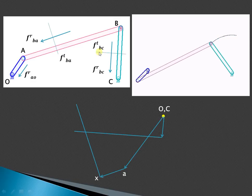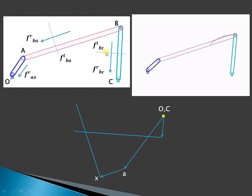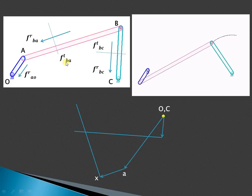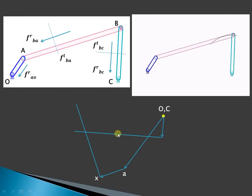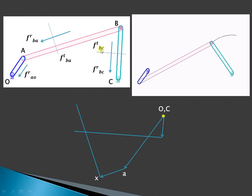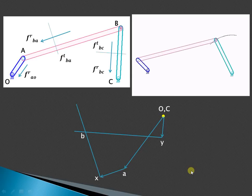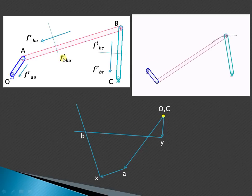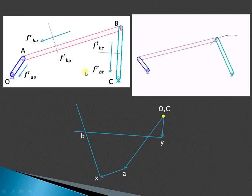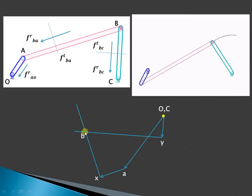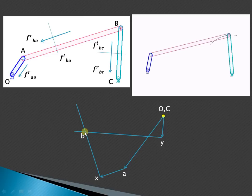Now draw a line parallel to this vector representing the tangential acceleration. This tangential vector is F_t_BA and this tangential vector is F_t_BC. Wherever they intersect, that is the common point of intersection — that is point B. The tangential acceleration of B with respect to A and the tangential acceleration of B with respect to C have point B in common, so this point of intersection is point B.